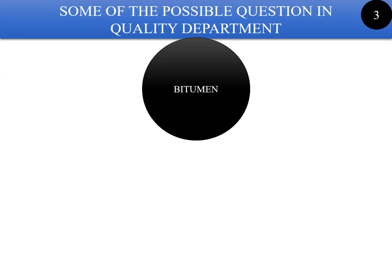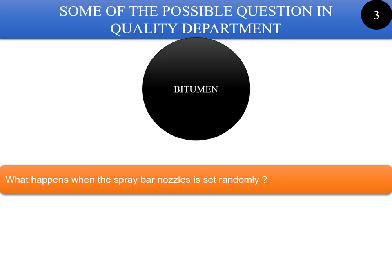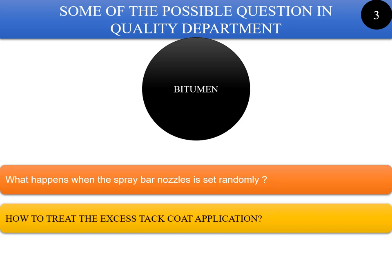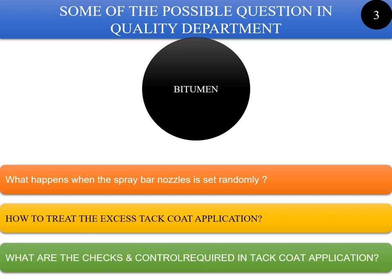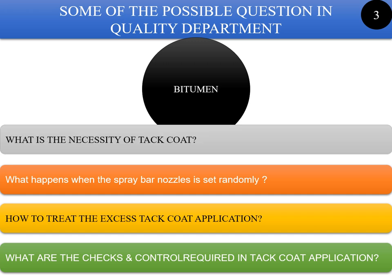In Set 3, some of the possible questions covered are: What happens when the spray bar nozzle is set randomly? How to treat excess tack coat applications? What are the checks and controls required in tack coat application? And what is the necessity of a tack coat?